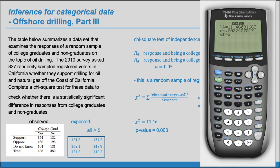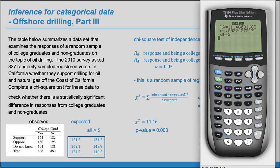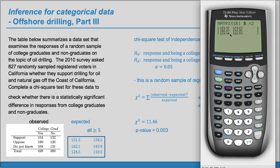We can record those values. We can actually go to 2nd Matrix and edit Matrix B. Before running the test, Matrix B didn't exist, but now it does because we've run our test. So we can edit Matrix B and find the expected counts. A shortcut you are allowed to do is to run the test via Stat, Test, chi-square, then edit Matrix B to find your expected counts and record them on your paper, and remember to indicate that they're all greater than or equal to 5.